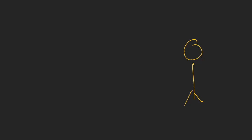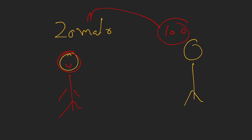Let's understand this through a better example. Suppose there is a user who always orders from Zomato, and Zomato has a delivery guy. This person has ordered 100 items. Zomato receives the order of 100 items. Now this delivery guy has a choice — he can deliver all 100 items in one go and come back to update Zomato. If he delivers all 100 items in one go, that means the iteration is 1 and the epoch is also 1.